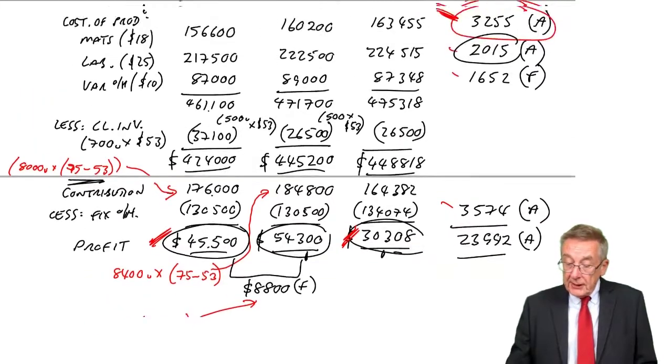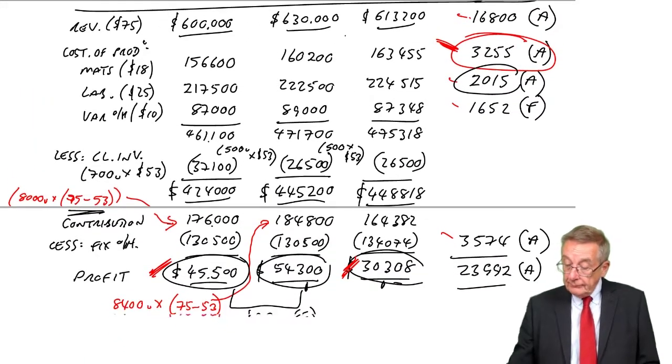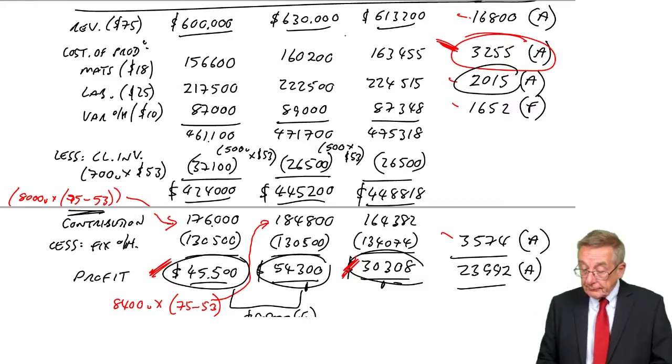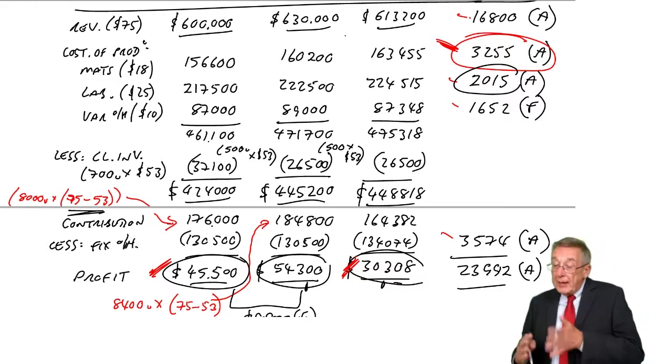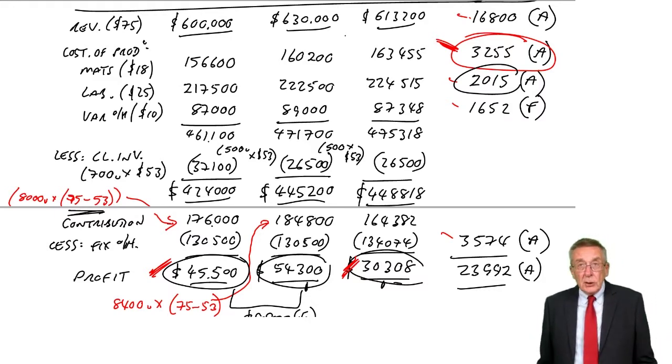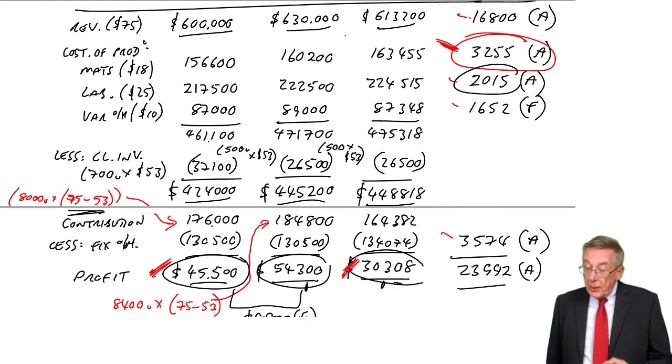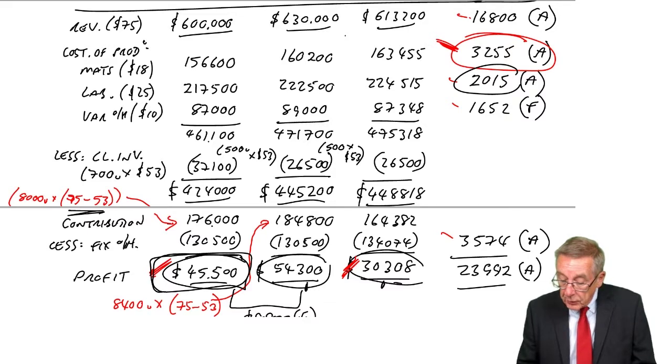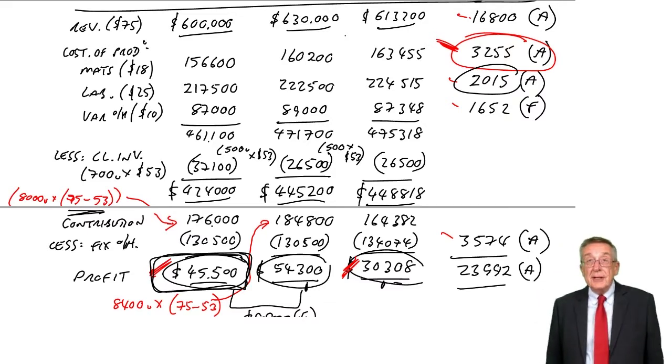If you look back to how I started in the first lecture, I set up the original fixed budget, we flexed it, we compared with the actual, and we got the variances. But I also said that what management are going to be keen on knowing, they originally budgeted on a profit of £45,500, they'll want to know why the actual profit was different.